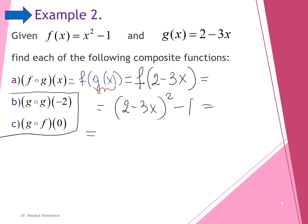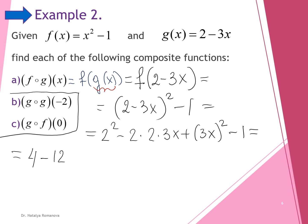Using the complete square formula: 2 squared minus 2 times 2 times 3x plus (3x) squared, minus 1. Simplifying gives 4 minus 12x plus 9x squared minus 1. So the composition f of g of x equals 9x squared minus 12x plus 3.